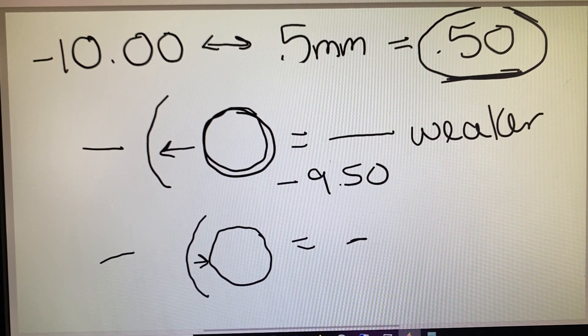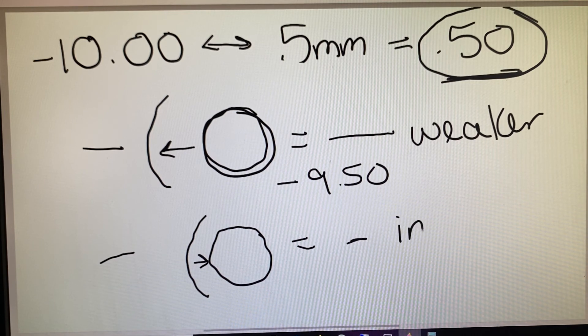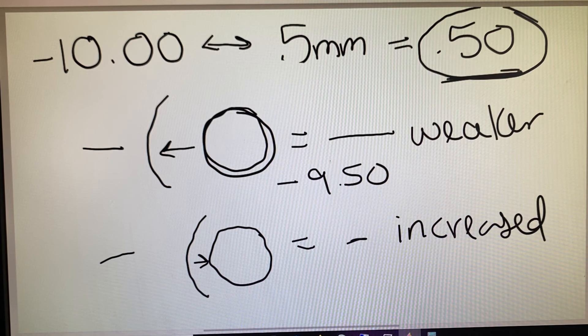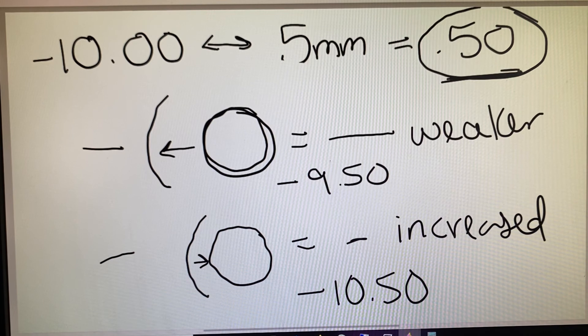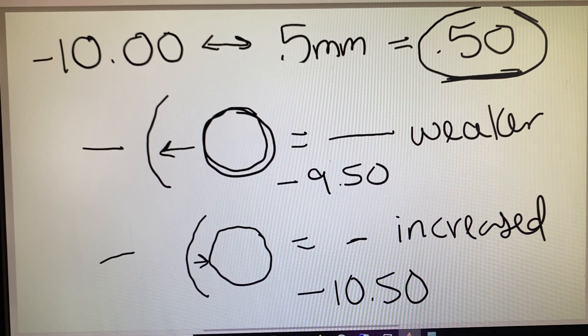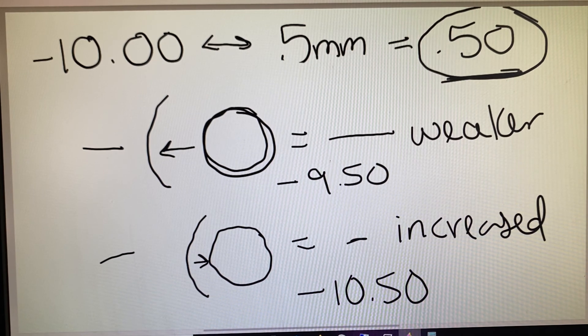but it increases the power of the lens. So they would actually feel like they were looking through a minus 10.50. So this is what the patient would feel like or the effect of that movement was.